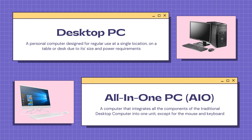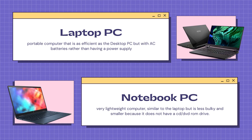The all-in-one PC, or AIO, is a computer that integrates all the components of a traditional computer into one unit, except for the mouse and keyboard. The laptop PC is a computer that is as efficient as the desktop PC but uses AC batteries rather than a power supply.